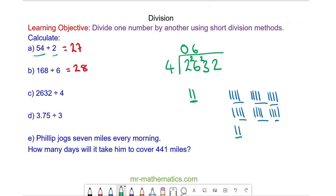4s into 23. We have 5 groups of 4 with 3 left over.